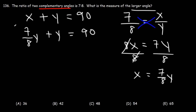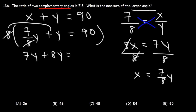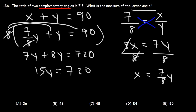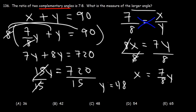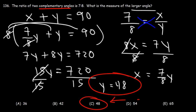Multiplying through by 8 to eliminate the fraction: 7y plus 8y equals 720, so 15y equals 720. Dividing both sides by 15, y equals 48. So the measure of the larger angle is 48°, and answer choice C is correct.